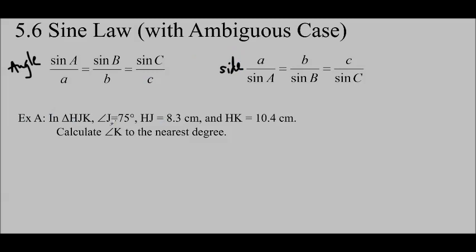Let's get started with a question. In triangle HJK, angle J equals 75 degrees, HJ equals 8.3 centimeters, and HK equals 10.4 centimeters.